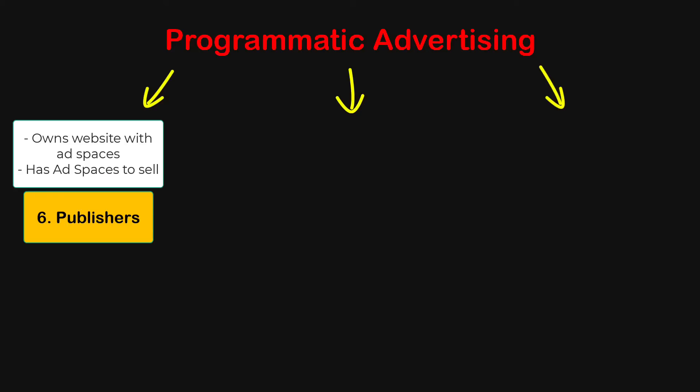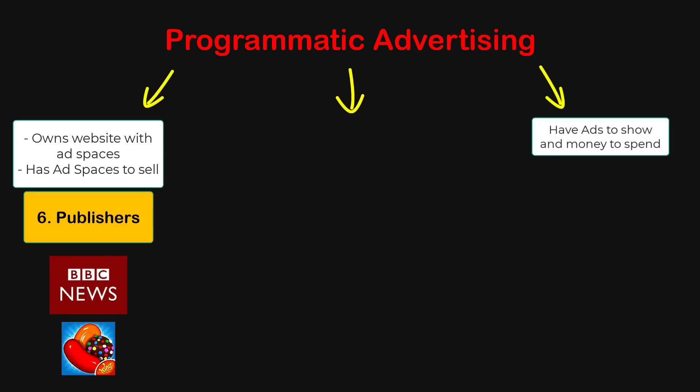Publishers have an audience who visits their websites and apps to get information, news, entertainment, etc. For example, BBC.com, Candy Crush, New York Times, Gold.com — all these websites have content which people go there to consume, whether that's entertainment, games, or news.